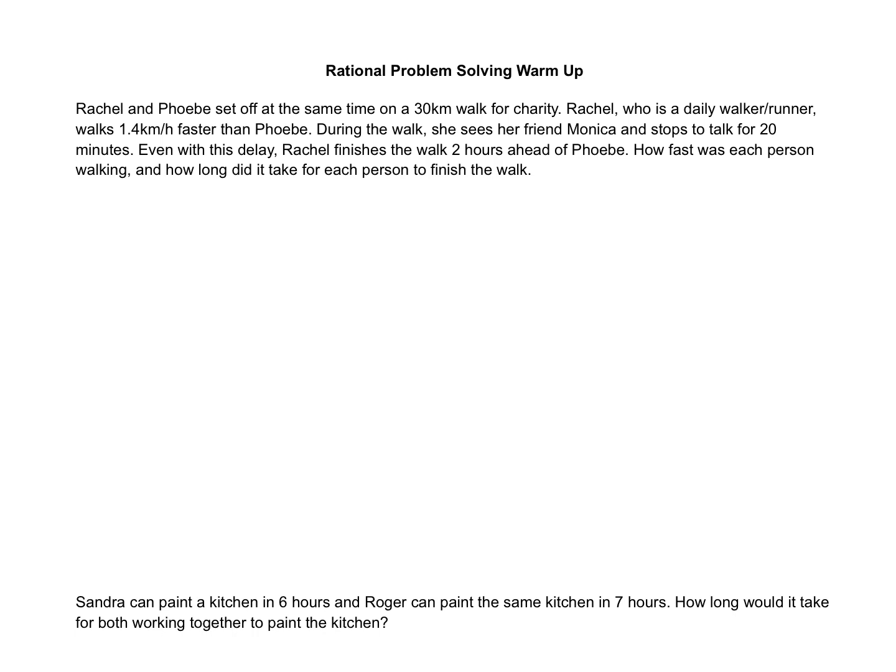Alright, I need to find speed and time. I'm going to let my variable represent one of the girl's speeds. So let x represent Rachel's speed. We're told that Rachel walks 1.4 kilometers faster than Phoebe, which means Phoebe walks 1.4 kilometers per hour slower than Rachel. So let x minus 1.4 represent Phoebe's speed. Now, we're told something about their times as well. I'm going to take the information and try to make an equation out of it just to wrap my head around what's going on.